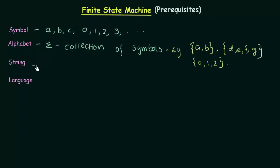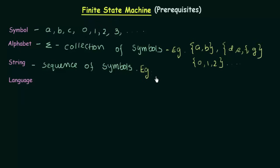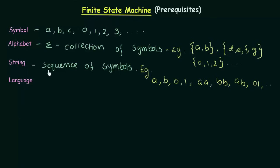Now let's come to String. What is a String? A sequence of Symbols is known as a String. For example, A by itself, 0 by itself, or 1 by itself can be called a String. Or we could have sequences like AABB, AB, or 01 and so on. A sequence of Symbols is known as a String.